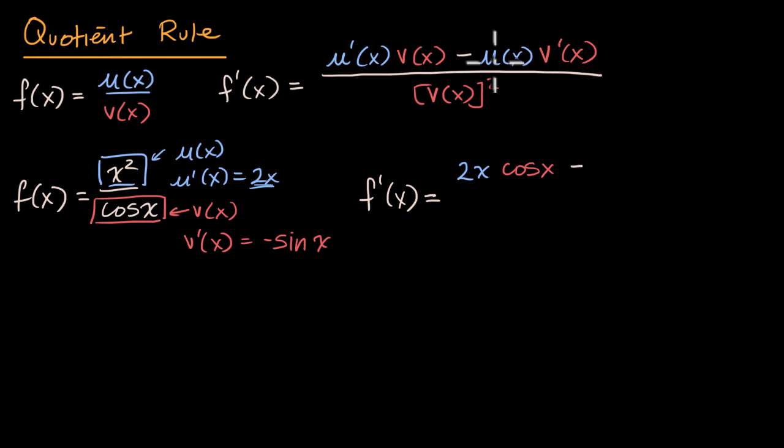minus the numerator function, which is just x², times the derivative of the denominator function. The derivative of cos(x) is -sin(x), so that's -sin(x). All of that over the denominator function squared. So that's cos(x), and I'm going to square it - cos(x)². At this point, we just have to simplify.